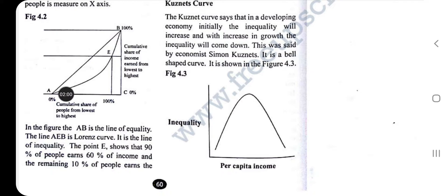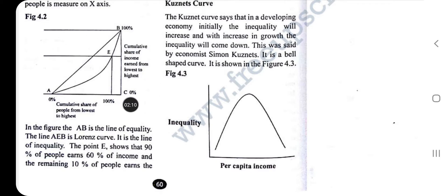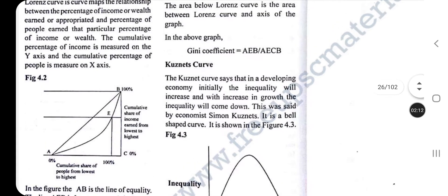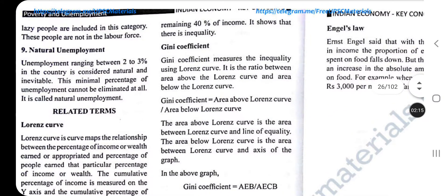So this shows, for example, 1% of the people earning 40% of the income. This graph illustrates the Gini coefficient and the Lorenz curve.